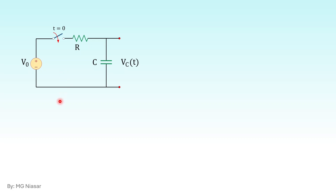The case that I want to show you is a transient analysis with an RC circuit. We have a DC source; at time equal to zero we turn on the switch, and this capacitor initially has zero volts. Gradually it will be charged and eventually it reaches the final value. First we analyze this problem analytically and then we see how to do the simulation in LTSPICE.